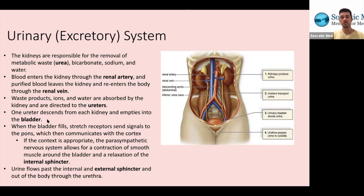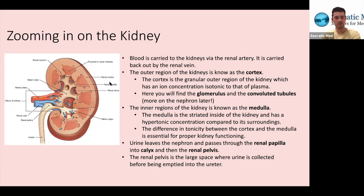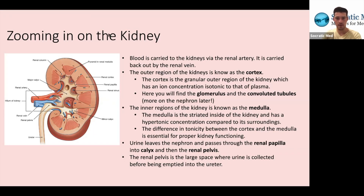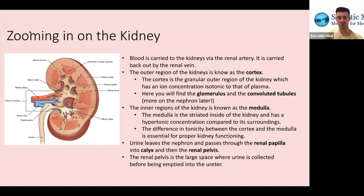That was a macro view of the urinary system. Now we're going to zoom in on the kidney. I've put another diagram to the left. The outer region of the kidney is known as the cortex — cortex generally refers to the outside, medulla to the inside, just like the brain. The cortex has an ion concentration isotonic to that of plasma, meaning the solute concentration is basically the same as plasma. We'll talk later about why that's important, but if you're familiar with osmosis, you can probably already understand why.